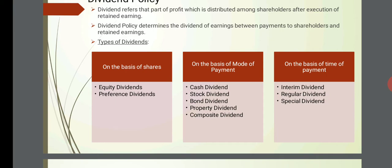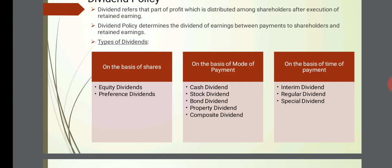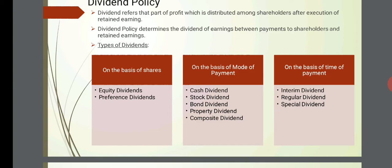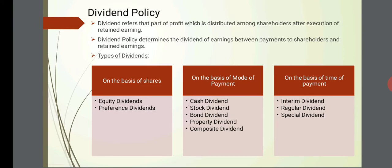On the basis of time of payment: regular dividend is paid at the end of the year when the final balance sheet is prepared; interim dividend is paid in the middle of the year, perhaps after six months; and special dividend is paid when something special has happened — for example, a particularly profitable project — and the company distributes part of that profit to shareholders.